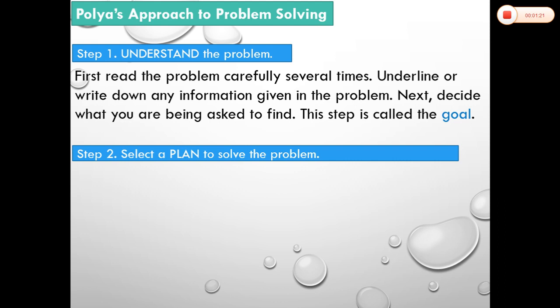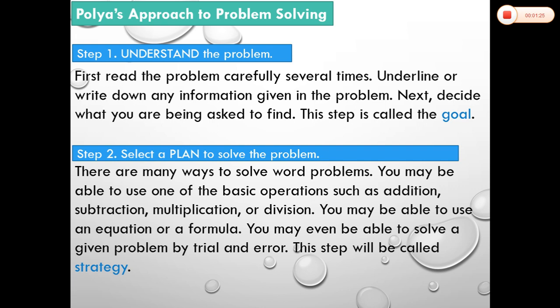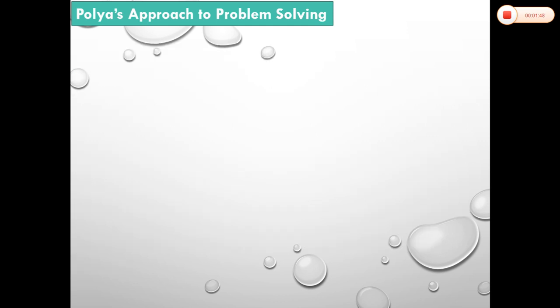Step number two is select a plan to solve the problem. There are many ways to solve word problems. You may be able to use one of the basic operations such as addition, subtraction, multiplication, or division. You may be able to use an equation or a formula. You may even be able to solve a given problem by trial and error. Therefore, this step will be called strategy.